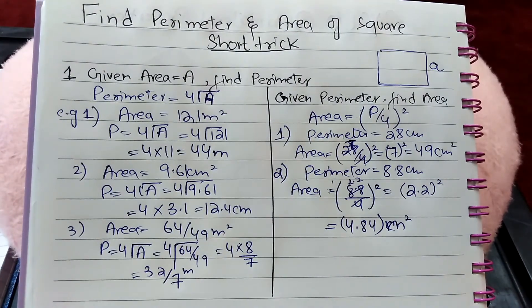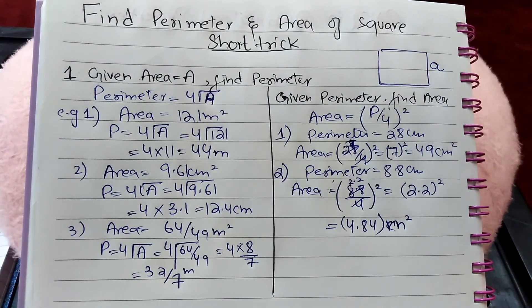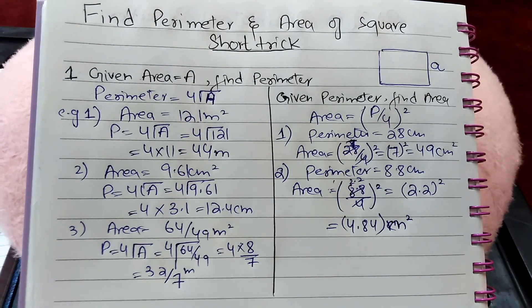So these two are short tricks to find perimeter and area of a square. Like and share my videos and subscribe to my channel.